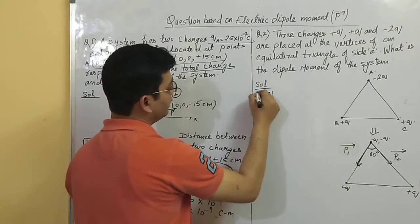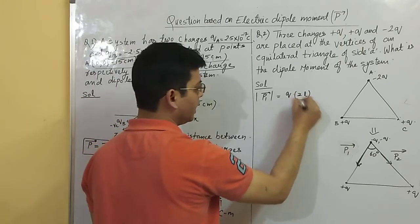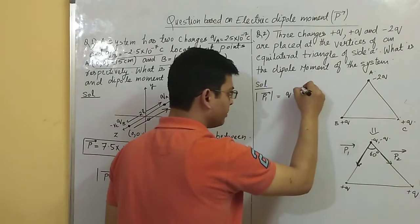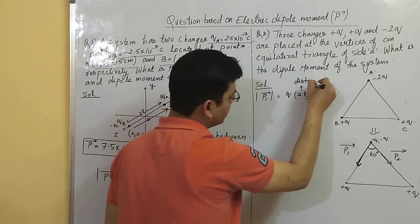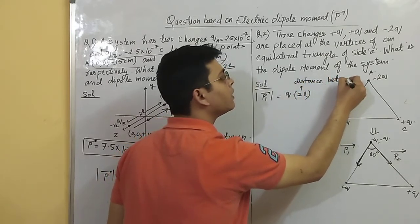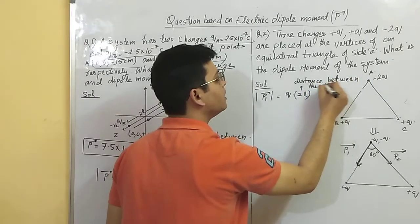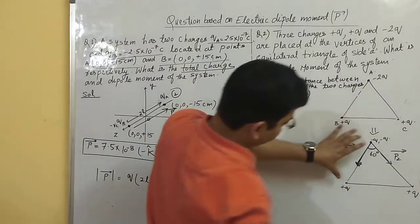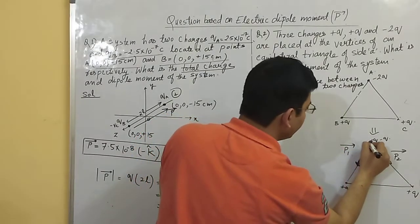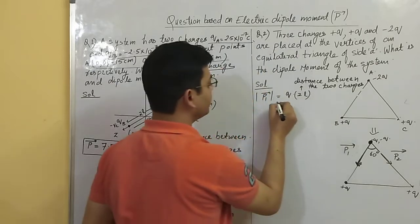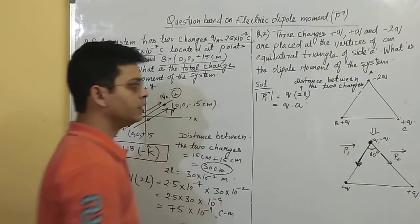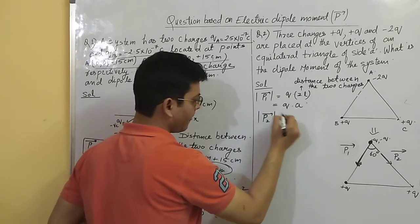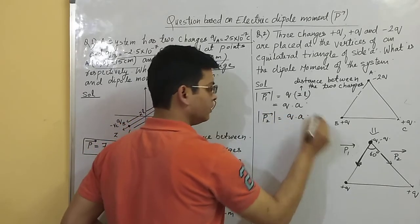The magnitude of P1 is q into 2L. Here, 2L equals the side length A, so the magnitude of P1 is q into A. Similarly, the magnitude of P2 is also QA, since the distance between those two charges is also A.